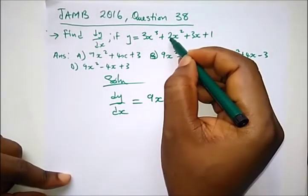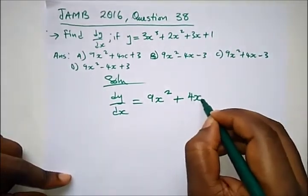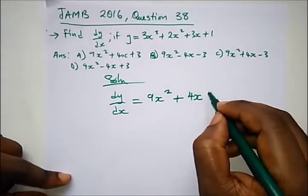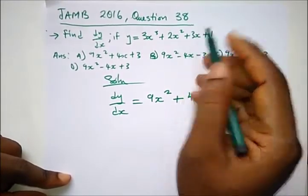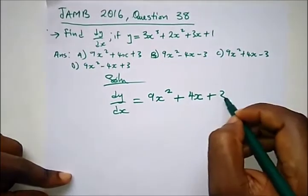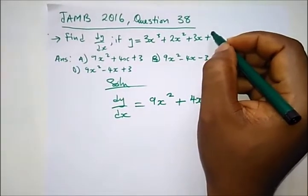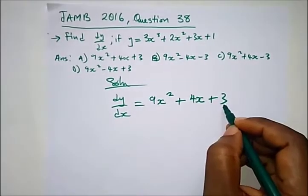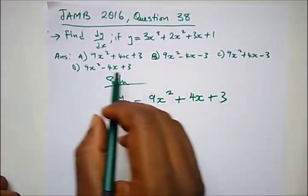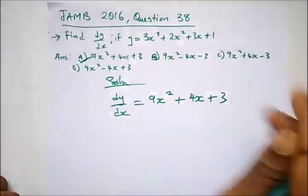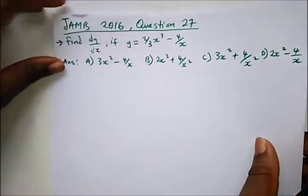Continuing: 2 multiplied by 2 gives 4, and 2 minus 1 gives x^1, which is 4x. Then for the constant term, 1 times 3 is 3, and x^(1−1) = x⁰ = 1, so we still have 3. The correct answer here is option A.